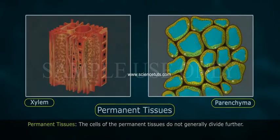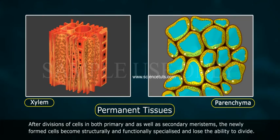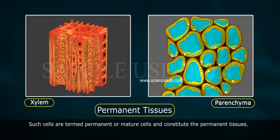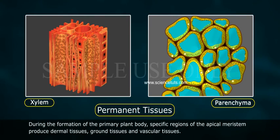Permanent tissues. The cells of the permanent tissues do not generally divide further. After divisions of cells in both primary and secondary meristems, the newly formed cells become structurally and functionally specialized and lose the ability to divide. Such cells are termed permanent or mature cells and constitute the permanent tissues. During the formation of the primary plant body, specific regions of the apical meristem produce dermal tissues, ground tissues, and vascular tissues.